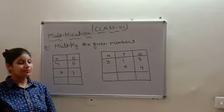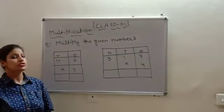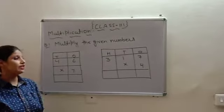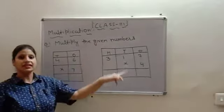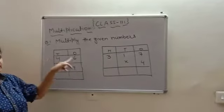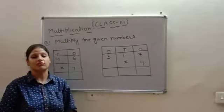Now, it's time to multiply numbers to find their product. So, to understand multiplication in a better way, I have taken an example. Multiply the given numbers. 46 multiply by 7. Now, how we will do it? Let's do it in a play way method.